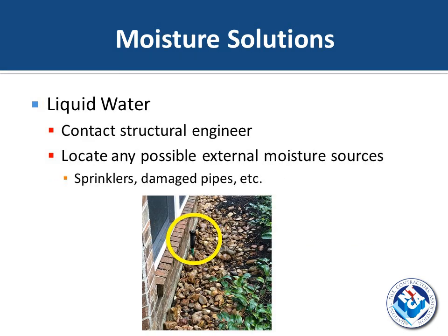For liquid water with hydrostatic pressure, your best option is to contact a structural engineer. Also, locate any possible external moisture sources — things like sprinklers, damaged pipes, or grading towards the house. Pictured here is a job site in Houston where the sprinkler is right next to the house and the grading of the lawn is sloped directly towards the house — both of these need to be remediated to prevent further moisture issues within the flooring.